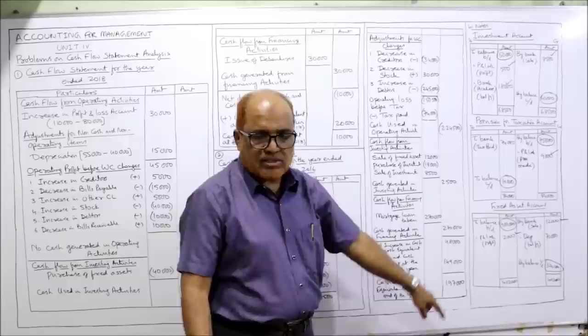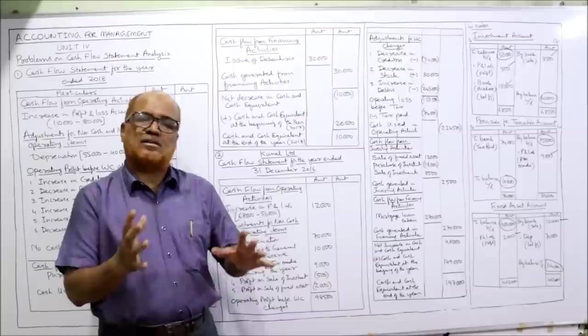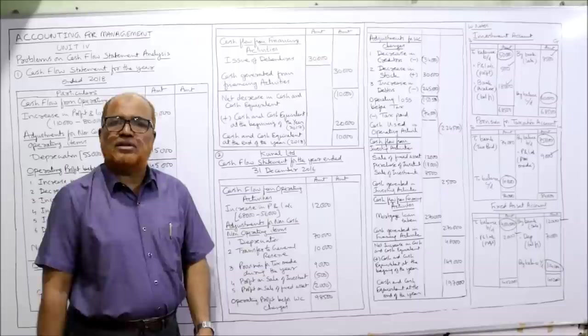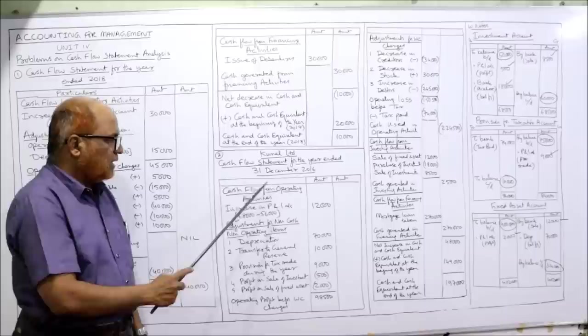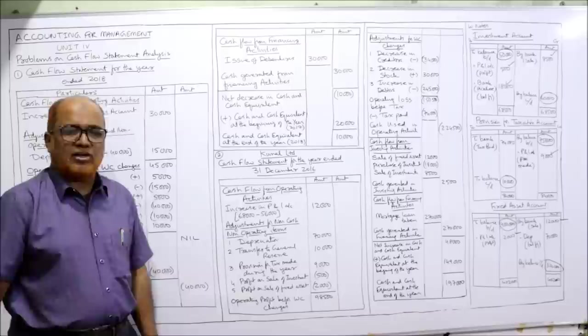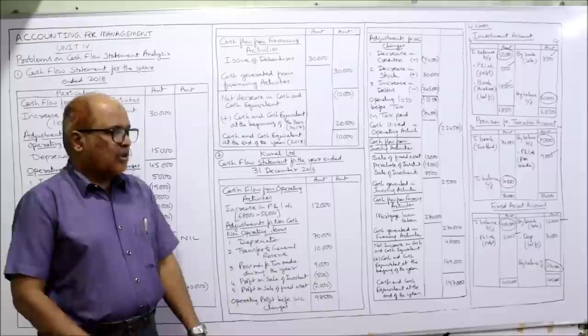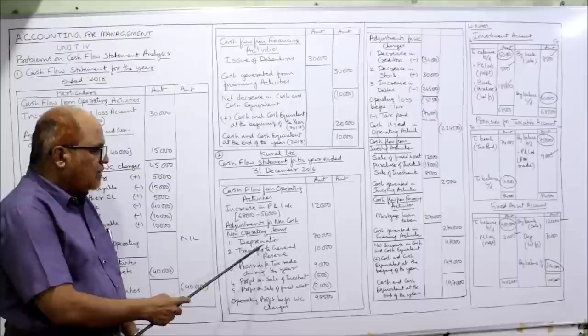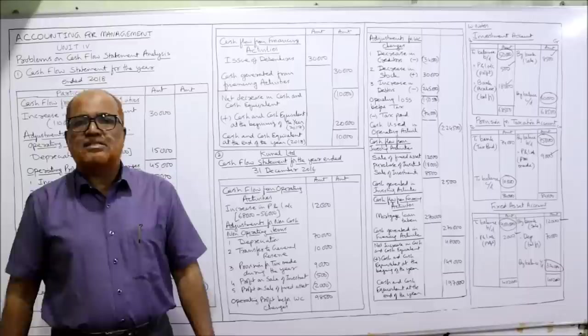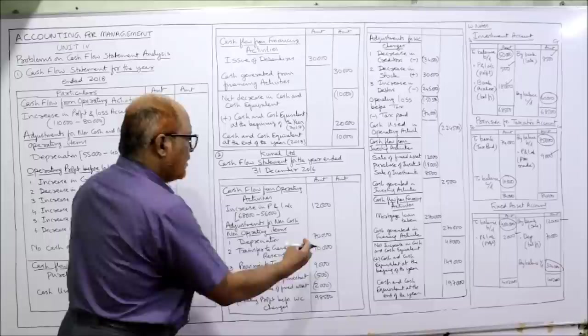Now formally starting the cash flow statement: Kunal Limited — cash flow statement for the year ended 31st December 2016. Cash flow from operating activities. First: increase in P&L account. P&L: last year 56,000, current year 68,000. Increase: 68,000 minus 56,000 equals 12,000. To this, adjust for non-cash non-operating items. Depreciation: 70,000, added. Transfer to general reserve: last year 3,00,000, current year 3,10,000 — transfer of 10,000 added.